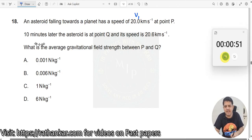So V1 is given. 10 minutes later, time is given. The asteroid is at point Q and its speed is 20.6 km per second.